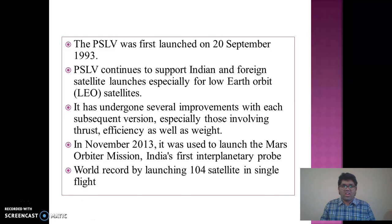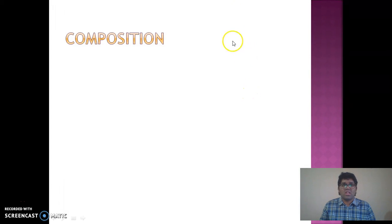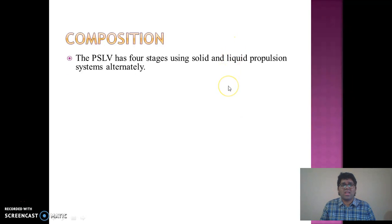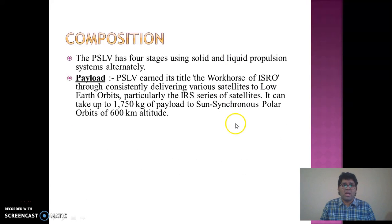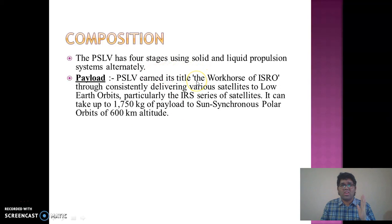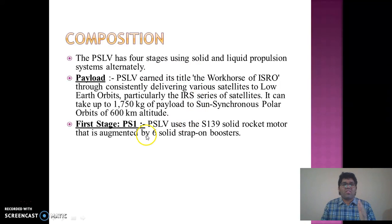PSLV also set a world record by launching not one but 104 satellites in a single flight — one primary satellite being Cartosat-2 and 103 co-passenger satellites from different countries, majorly from the USA. The PSLV has four stages using solid and liquid propulsion systems alternately. It has a payload capacity of 1,050 kg into sun-synchronous polar orbit at around 600 to 900 kilometers altitude. PSLV is called the workhorse of ISRO.